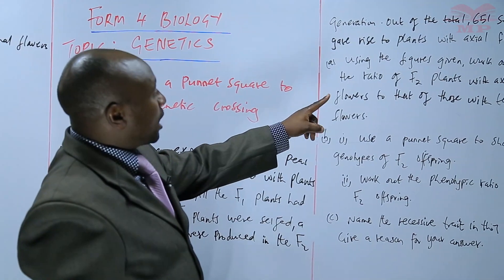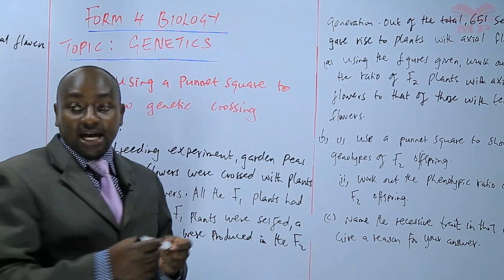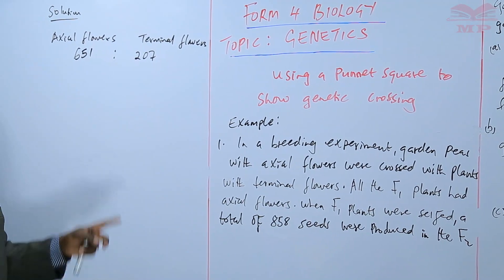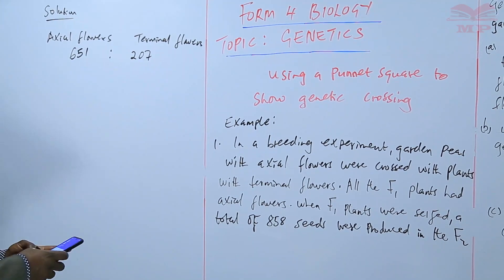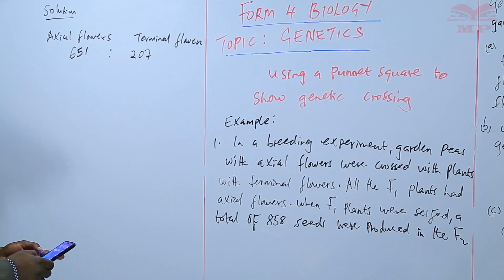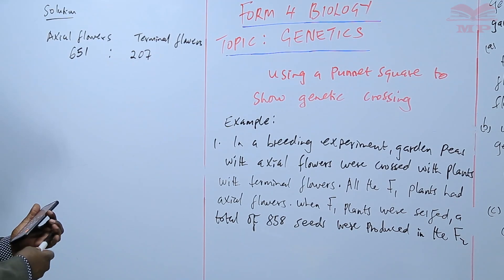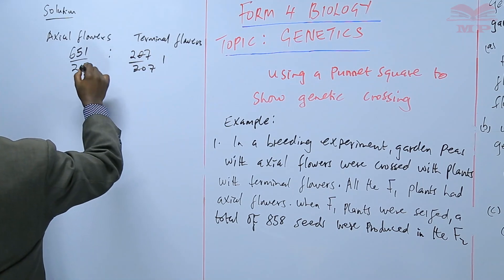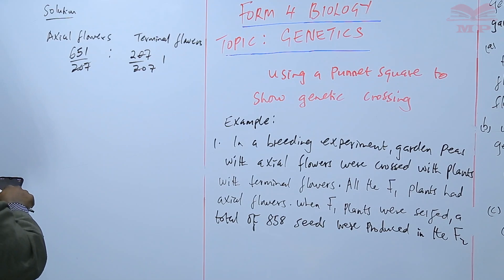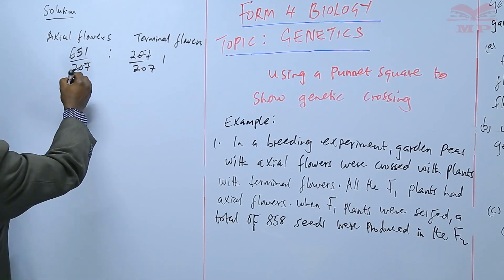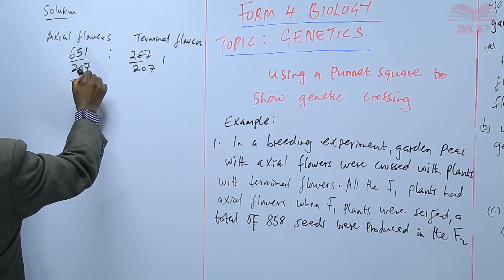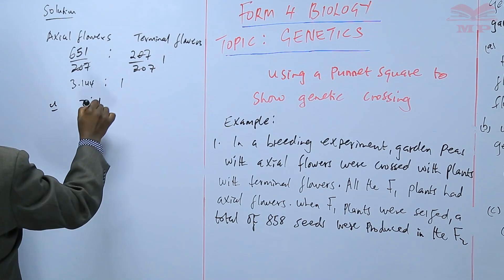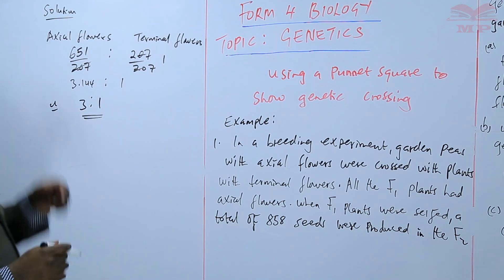So when you add 651 and 207 you get 858, which was the total. Then we are told to work out the ratio of axial flowers to terminal flowers. We should not leave the ratio as 651:207 — we should simplify it. To simplify, we divide both sides by 207. That gives us 1 on one side, and 651 divided by 207 equals approximately 3.14, so the ratio is approximately 3:1. We should always leave the ratio in its simplest form.